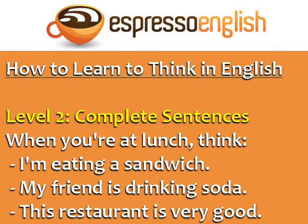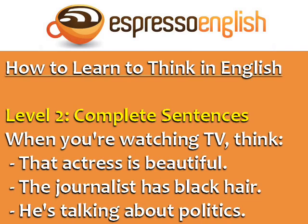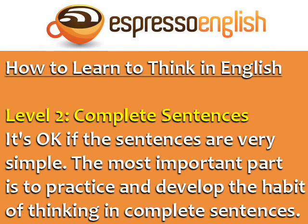Level 2 is thinking in complete English sentences. On this level, you think in complete phrases and sentences during the day. When you're eating lunch, think: I'm eating a sandwich. My friend is drinking soda. This restaurant is very good. When you're watching TV, think: That actress is beautiful. The journalist has black hair. He's talking about politics. It's okay if the sentences are very simple. The most important part is to practice and develop the habit of thinking in complete sentences.